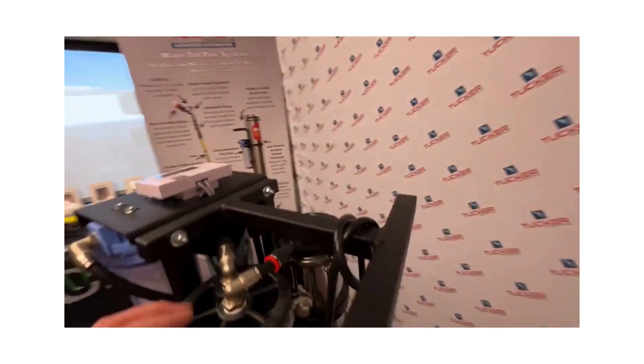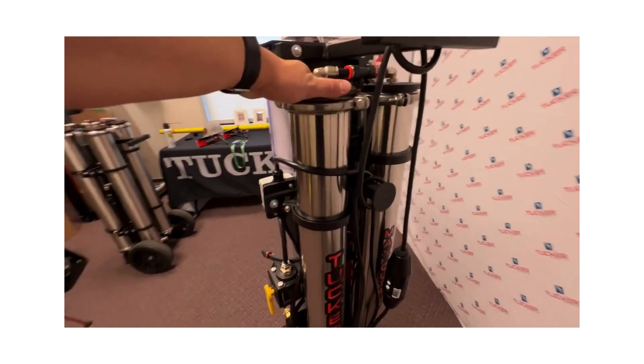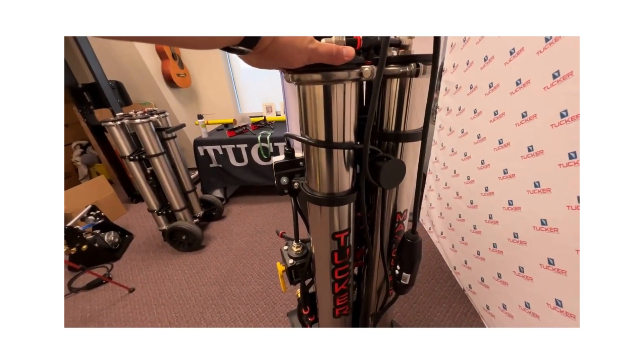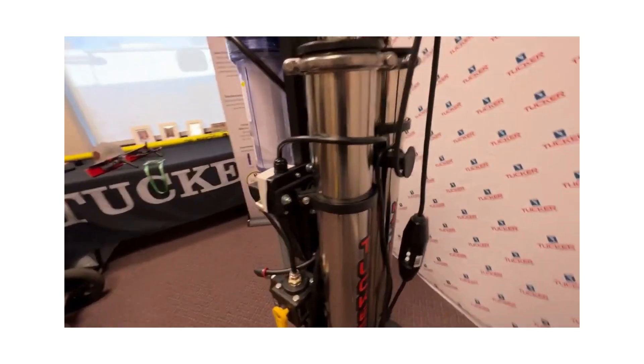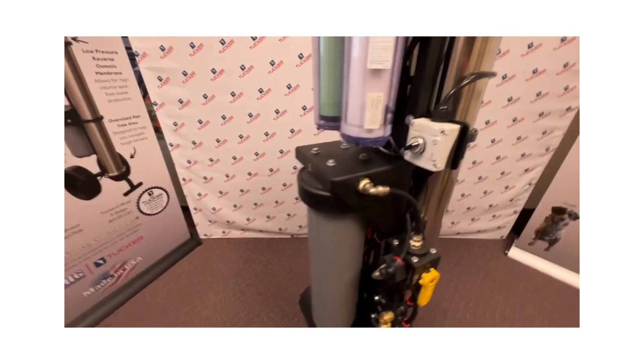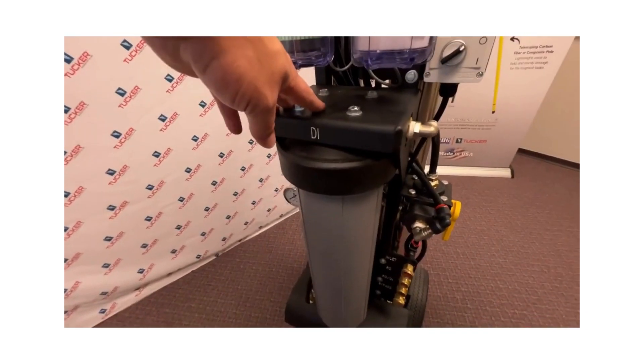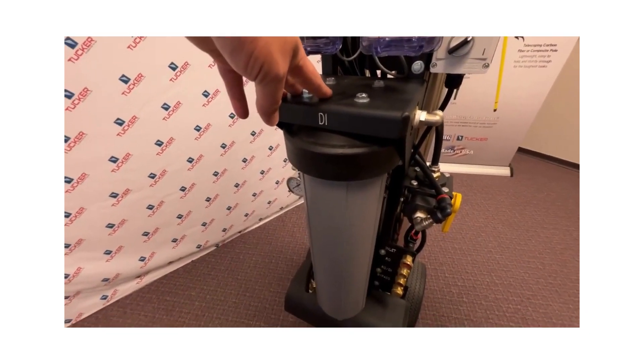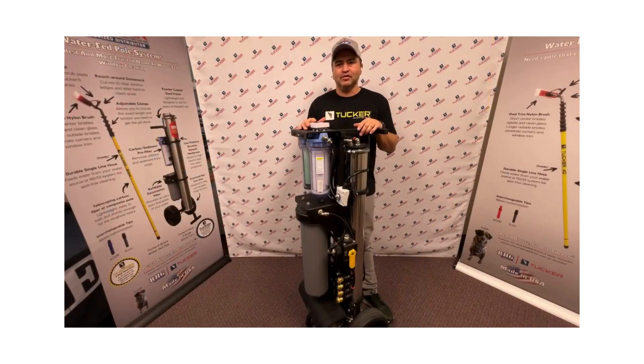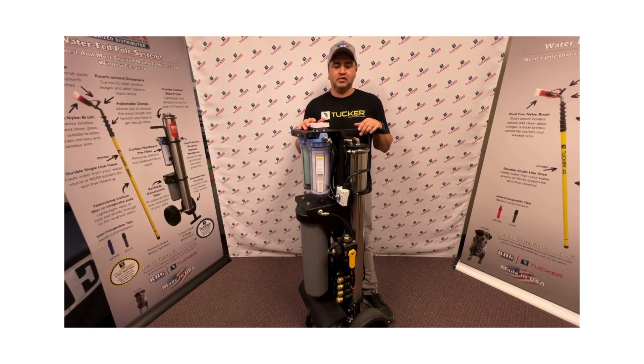Then it will move into your dual ROs and finally back over here and move into your 20-inch refillable DI cartridge. So there you have it. This has been a review of our Tucker Max Output five-stage system.